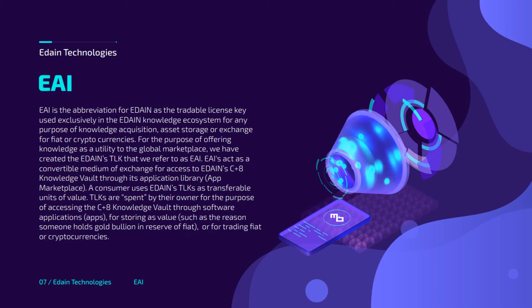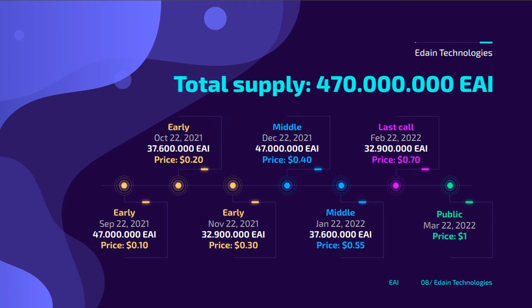Dell plays a big role in creating the Edain token, which will be used to get access to the Edain C+8 knowledge world — to the apps in the marketplace. This token is called EAI and will represent a tradable license key, spent for the purpose of accessing the C+8 knowledge vault. It will be an ERC-20 token that members can buy in five different stages, and right now we are in the second early stage.